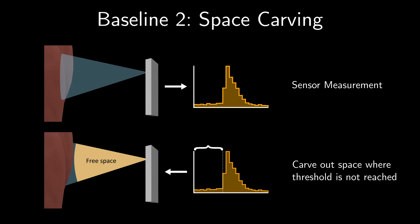The second baseline is space carving. The idea here is that it's safe to carve out distances at which the intensity of returning light is below some threshold. By doing this for every sensor, we can expose the underlying scene like a sculptor chipping away at marble.